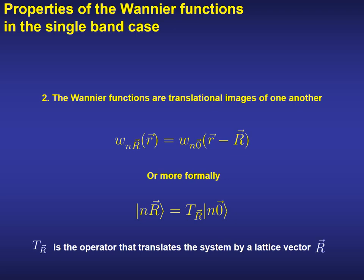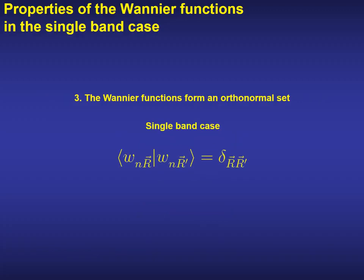The second property is that at each unit cell in real space, we can define a Wannier function, and they are the translational images of one another. The third property is that the Wannier functions form an orthonormal set, both in the band index and in the unit cell index. So, if they are used as the basis function, then the overlap matrix is the identity.